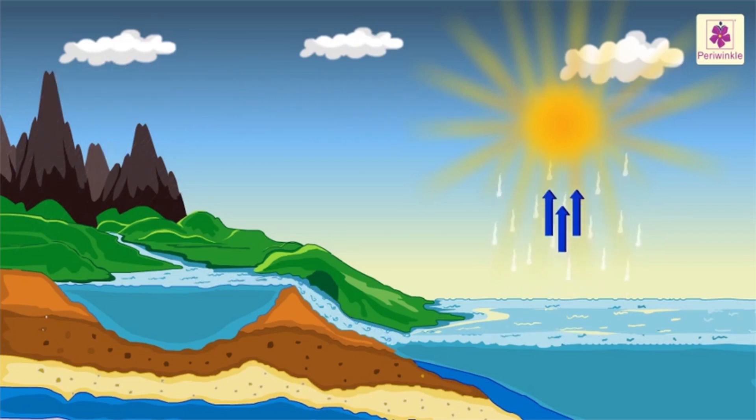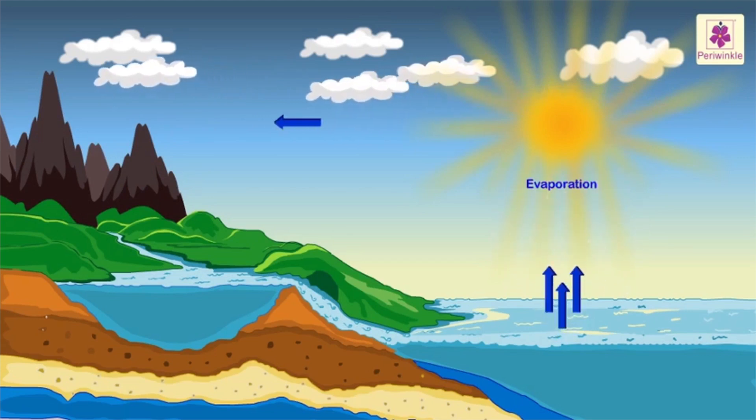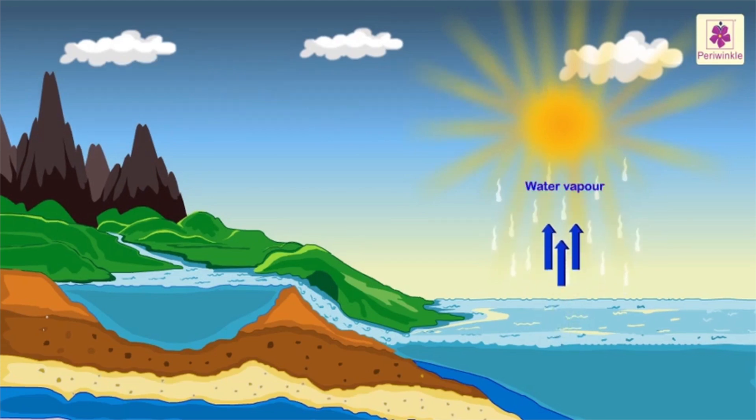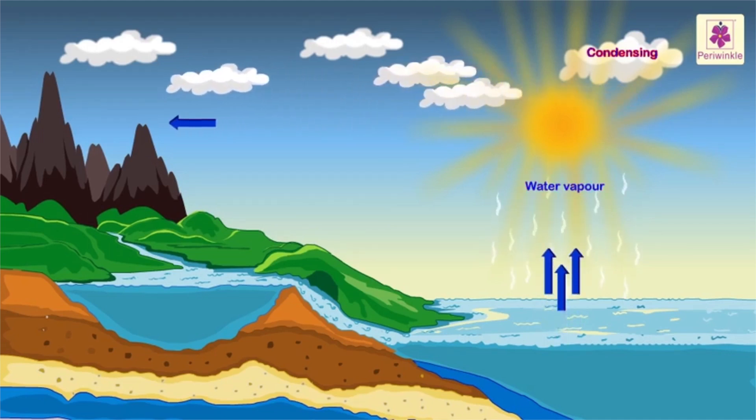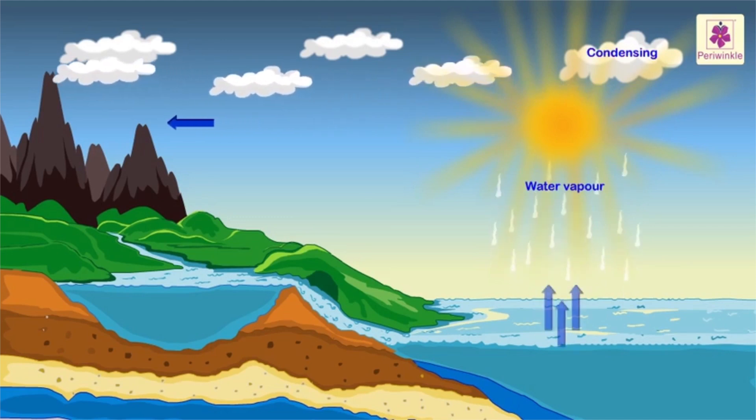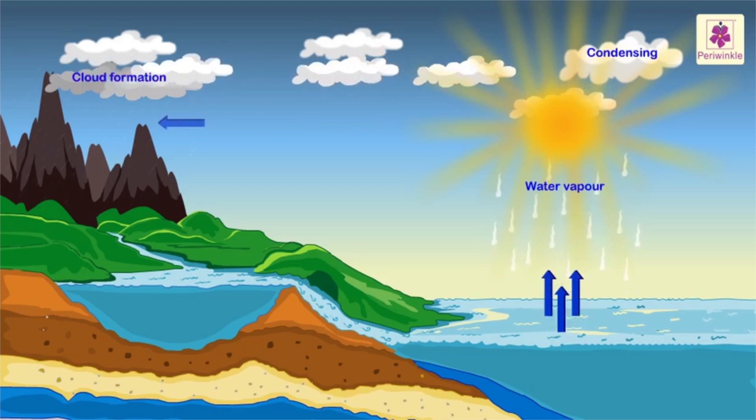The heat of the sun causes evaporation of the water from the water bodies in huge quantities. The water vapor rises in the troposphere where it cools and condenses. These get converted to water droplets or snowflakes depending upon the temperature.